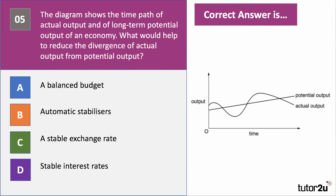Question five. The diagram shows the time path of actual GDP and long-run potential GDP of a country. What would help to reduce the divergence of actual output from potential output? The right answer to question five is B — automatic stabilisers.